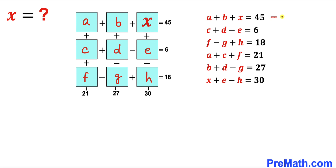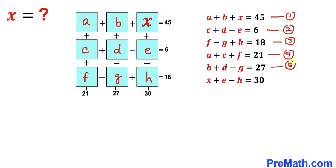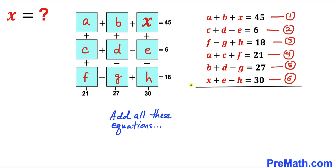Let me label these as equation number one, equation number two, number three, number four, equation number five, and finally equation number six. So we have six total equations.